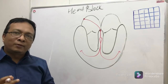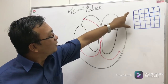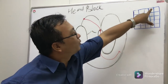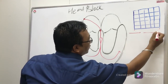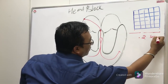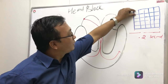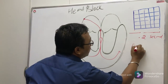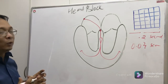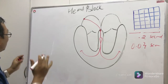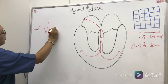To understand heart block, let's make it very simple. On the ECG strip, one big square contains five small squares. The time taken to travel one big square is 0.2 seconds. One small square equals 0.04 seconds. You need to remember these values to diagnose heart block, because today we will be dealing with the PR interval.